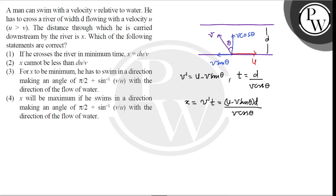So for X to be minimum, dX by dθ should equal zero. Using the quotient rule, V cos theta into differentiation of numerator U minus V sin theta into D minus U minus V sin theta into D differentiation of denominator d by dθ of V cos theta divided by V cos theta whole square.